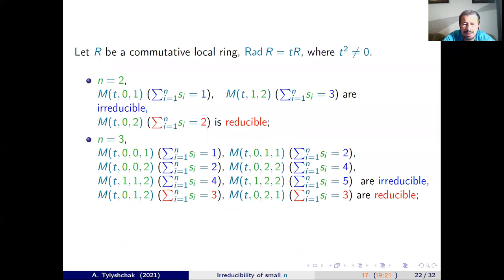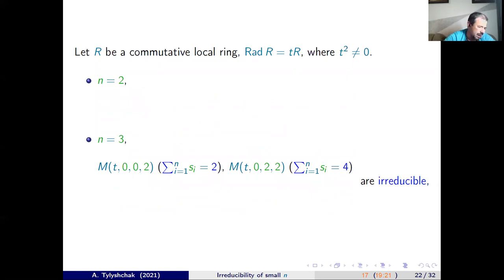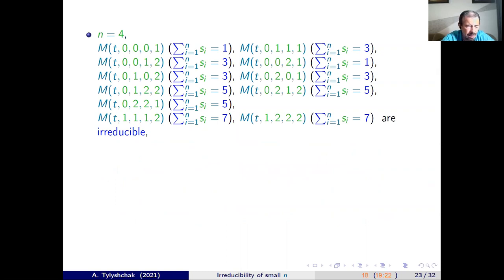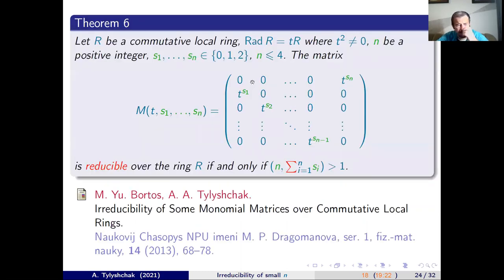Then we assume that exponents can be 0, 1, or 2, and that T squared is not equal to zero. We consider cases after omitting those following from previous results. For size 3, we have two cases and prove the matrix is irreducible. For size 4, after omitting known cases, we have seven cases to consider and prove that the matrices are irreducible in all of them. This result was obtained with Maria Bortos and myself.